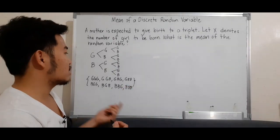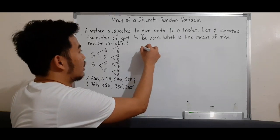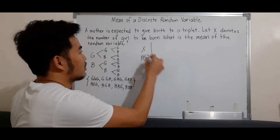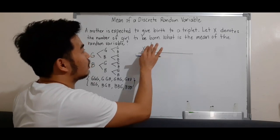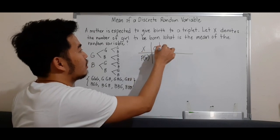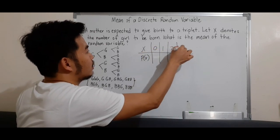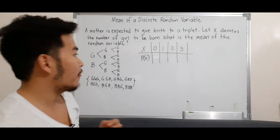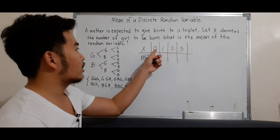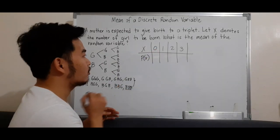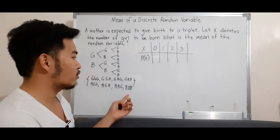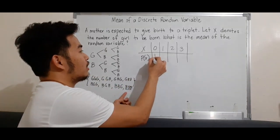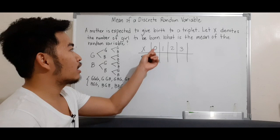Now, let's list the frequency of each outcome. So we have x and the probability of x. We have zero girls or no girls, one girl, two girls, and three girls, since x denotes the number of girls to be born. How many have no girls? The three boys outcome. That's 1 out of 8, so the probability of no girls is 1/8.